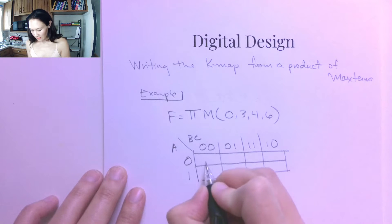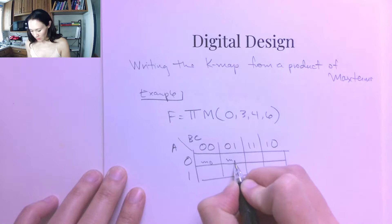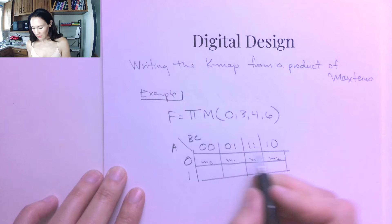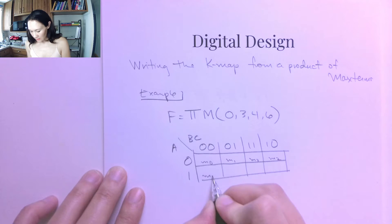And now, if this is min-term 0, min-term 1, min-term 2, min-term 3, notice the skipping because of the gray code. Then this is min-term 4, min-term 5, min-term 6, min-term 7.